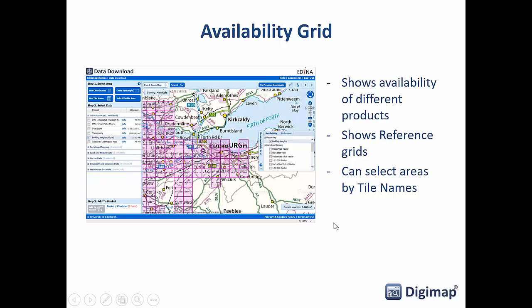There's also an availability grid for each product — either click the info link and then the 'show availability' link, or bring up the availability grids from the right-hand side of the data download interface. This shows you where the data is available. For Ordnance Survey, it's mainly the building heights data that lacks national coverage. It's very important for other products, particularly historic Digimap where coverage is patchy for different eras, and for LiDAR where coverage varies by resolution.